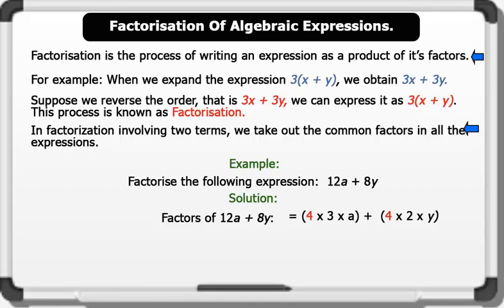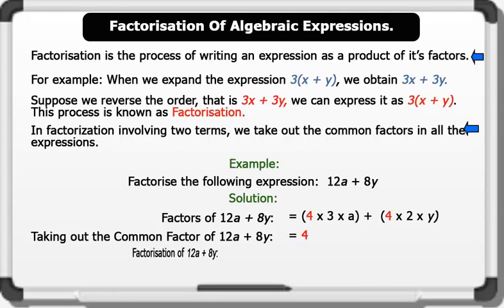Remember that in factorization involving two terms, we take out the common factors in all the expressions. Taking out the common factor of 12a plus 8y, we have 4. Therefore, the factorization of 12a plus 8y equals 4 bracket 3a plus 2y. That's awesome.